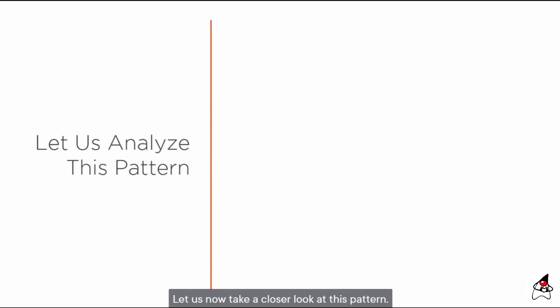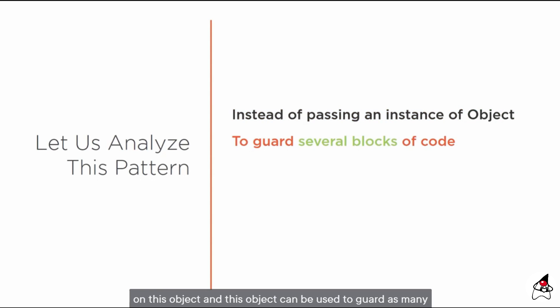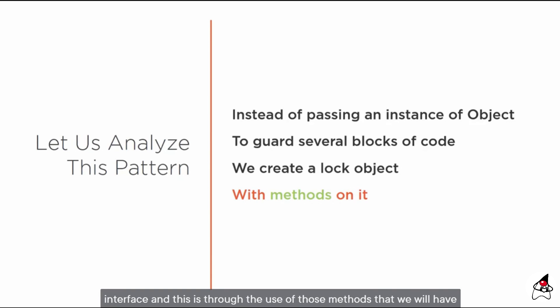The lock pattern offers the same guarantees as synchronized — execution exclusivity, read and write ordering, and visibility (happens-before links between operations) — and also provides more functionality. Because instead of being a language primitive like the synchronized block, it is an API with many more methods available on it. We can create a lock object instance of the lock interface, and through the methods of this interface, we get more patterns and functionalities for guarding blocks of code.